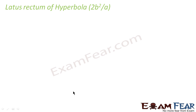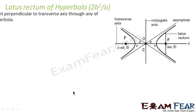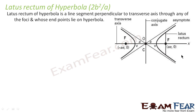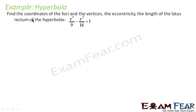The latus rectum of a hyperbola is also 2b squared by a. So here also, if you see the latus rectum, this distance is nothing but 2b squared by a. As we have seen in the ellipse also, the latus rectum is a line passing through the focus, perpendicular to the axis, and that meets the hyperbola. This is the LR, that is 2b squared by a.